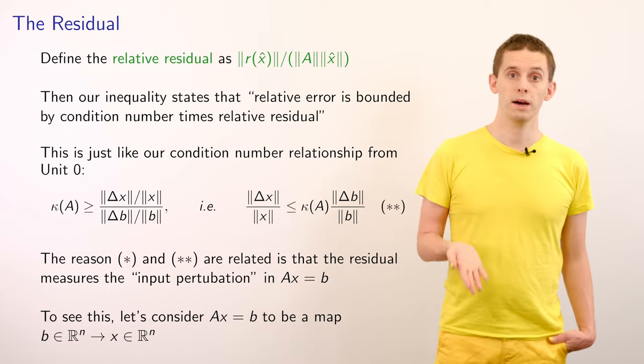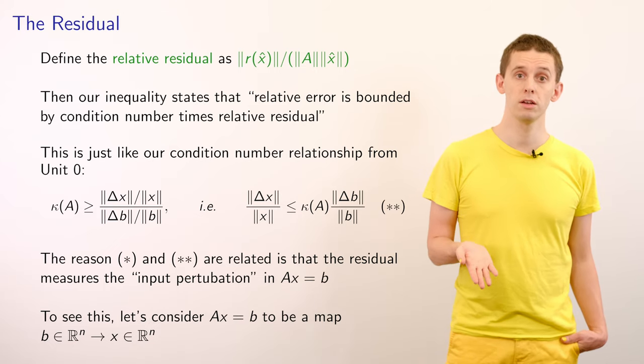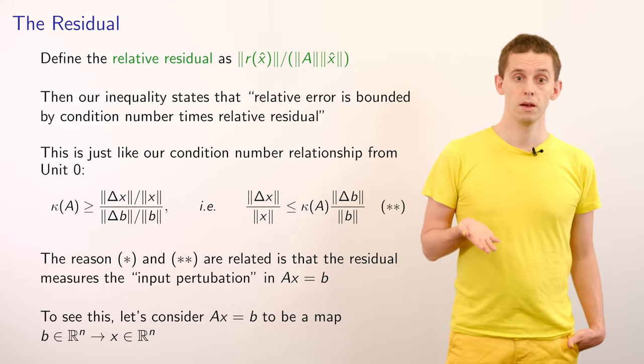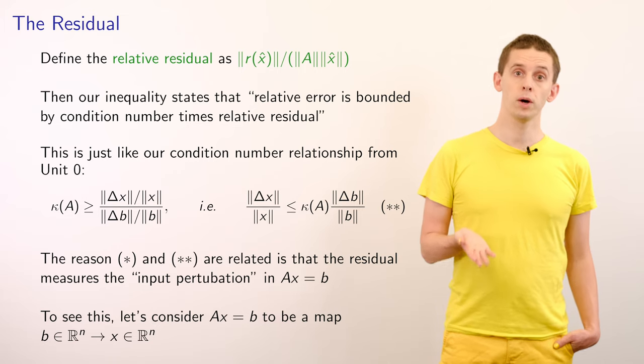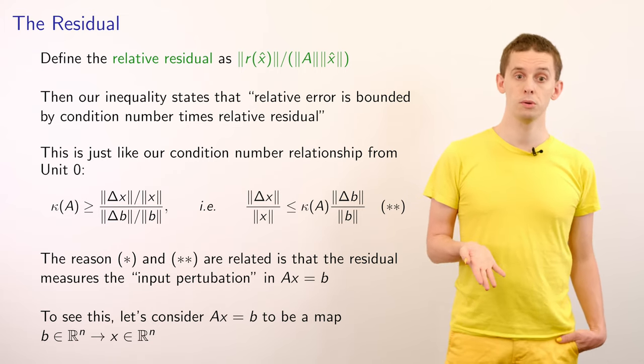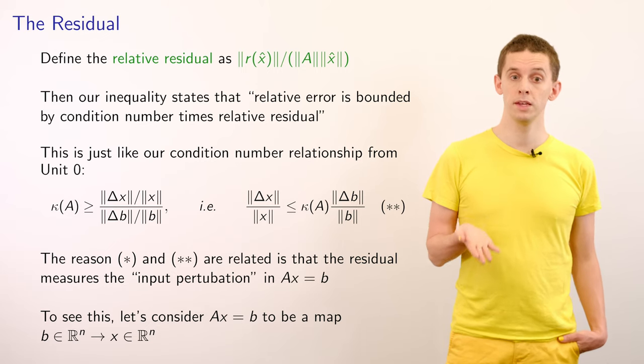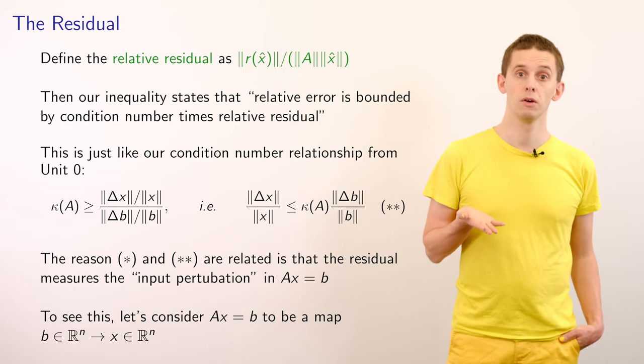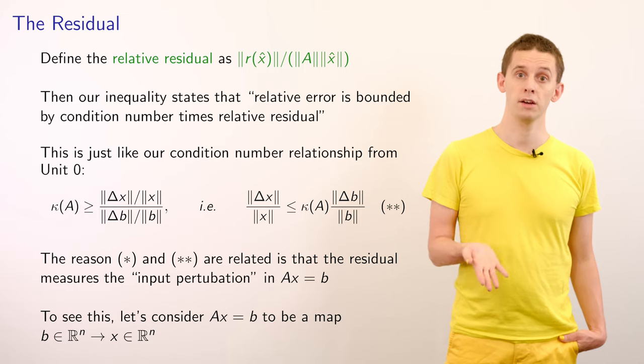So we now have two closely related quantities. And the reason why we can make a direct connection here is that the residual really measures the input perturbation in our system Ax = b.